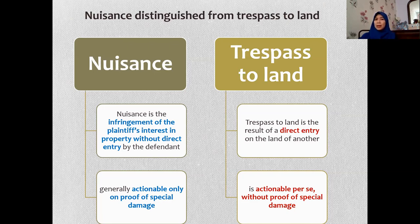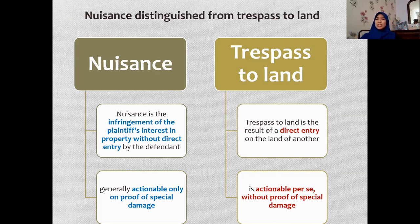Nuisance is indirect, whereas trespass to land results from a direct entry on the land of another. Another distinction is that for nuisance, it is generally actionable only on proof of special damage — the plaintiff must provide evidence of special damage suffered. But for trespass to land, it is actionable per se; the moment it is committed, the plaintiff has the right to sue without needing to prove special damage.